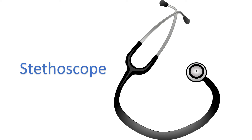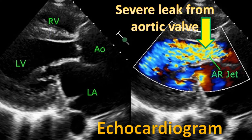Important tests done in case of aortic regurgitation are ECG, X-ray of the chest, and echocardiogram or ultrasound study of the heart. ECG and X-ray will give indications of enlargement of the left ventricle. Echocardiogram will show the leak and the severity can be quantified. It will also give an estimate of the sizes of the heart chambers and the pumping function of the left ventricle. Specific findings may also be noted in case of infections of the aortic valve.